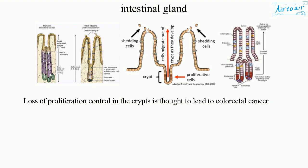Loss of proliferation control in the crypts is thought to lead to colorectal cancer.